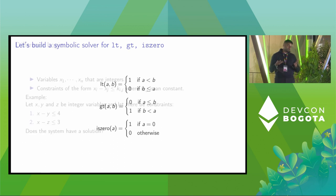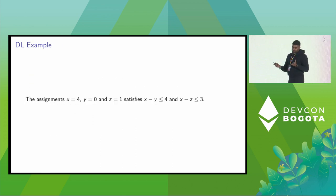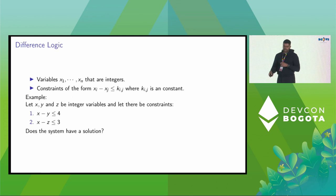Let's start with an example. X, Y, and Z are integer variables and let there be constraints, two of them: X minus Y less than or equal to 4 and X minus Z less than or equal to 3. The question is, does the system have a solution? It does have a solution. You can just assign X equal to 4, Y equal to 0, Z equal to 1, and these two constraints are satisfied. You can generalise this difference logic by saying you can have n number of variables, X1 to Xn, that are integers, and constraints of the form XI minus XJ less than or equal to a constant.